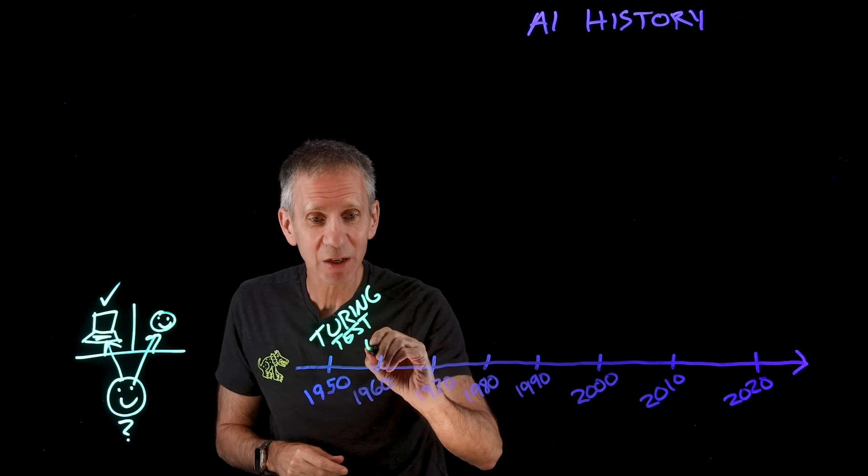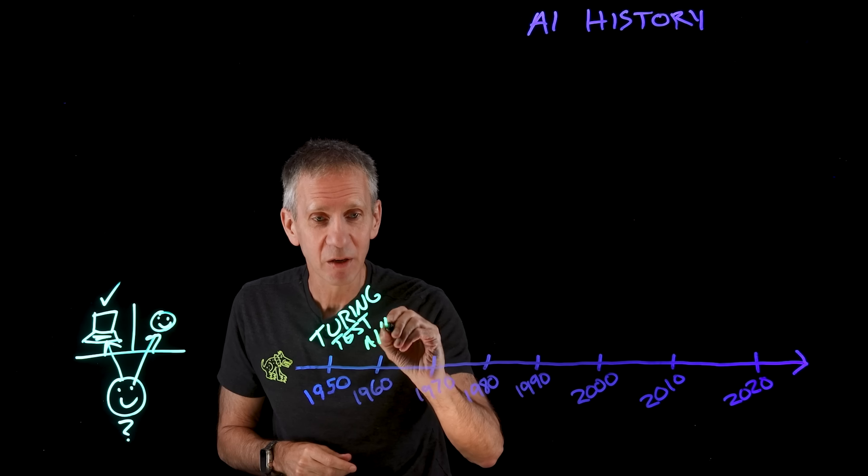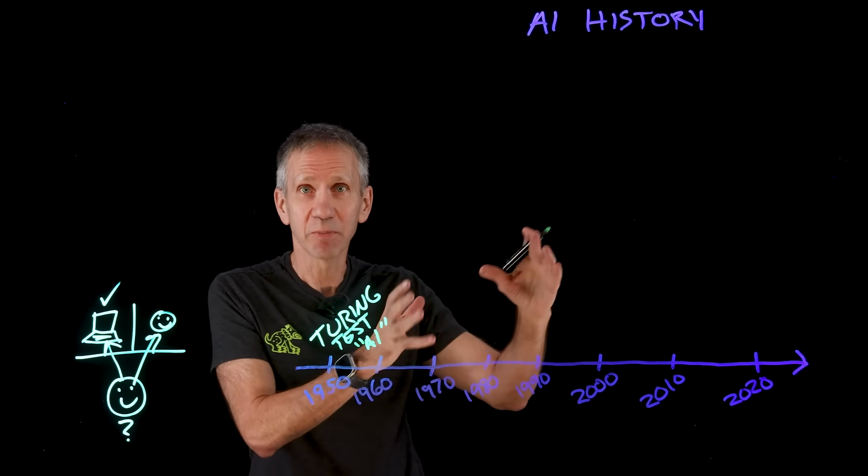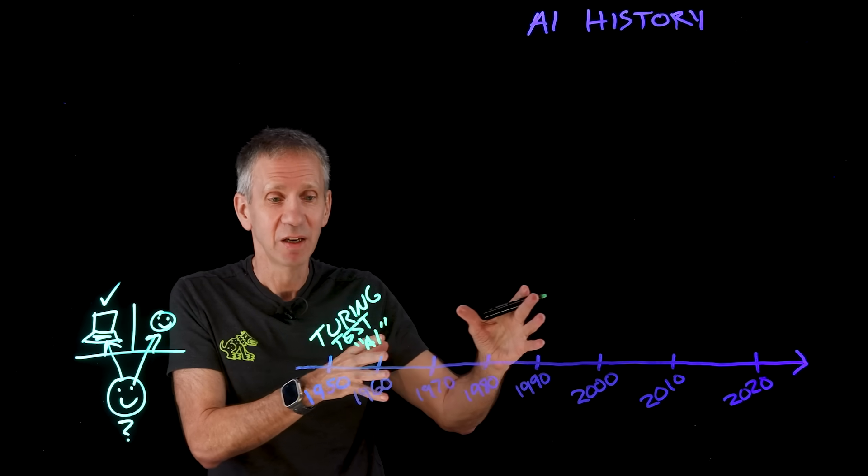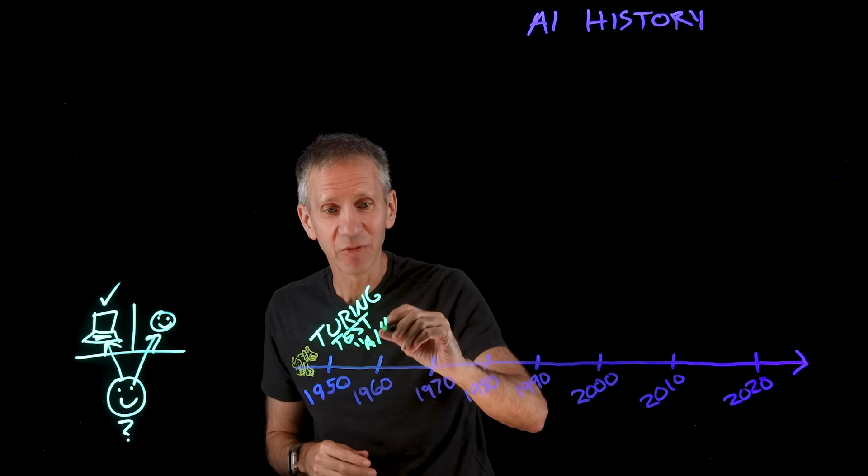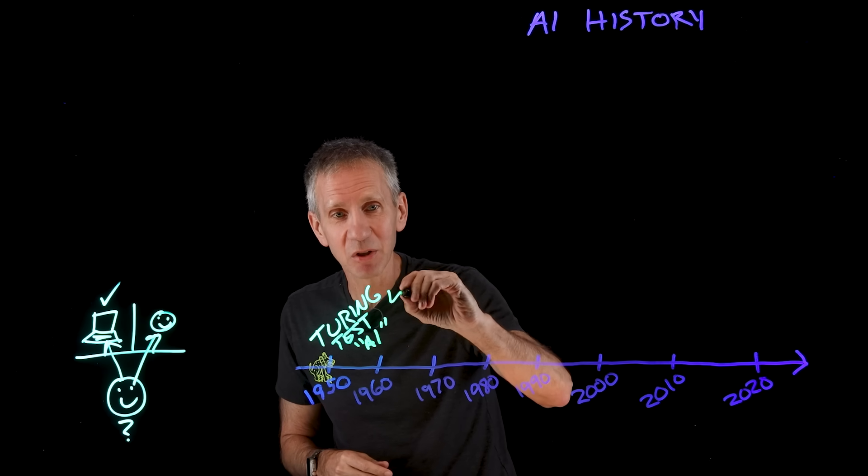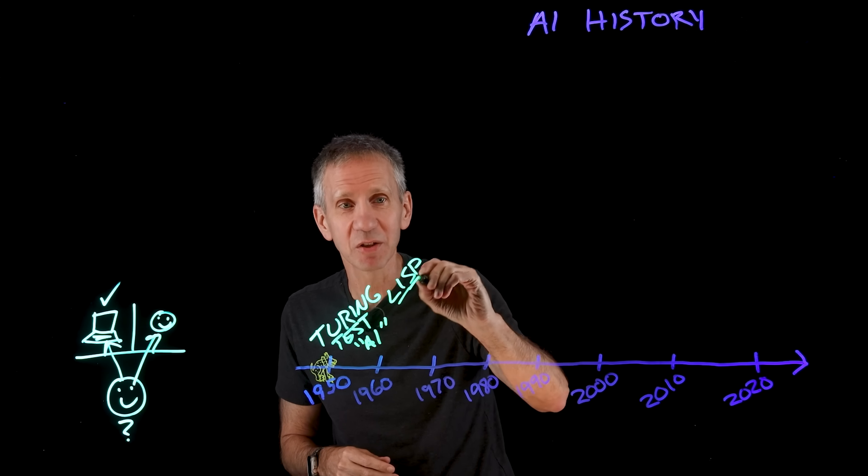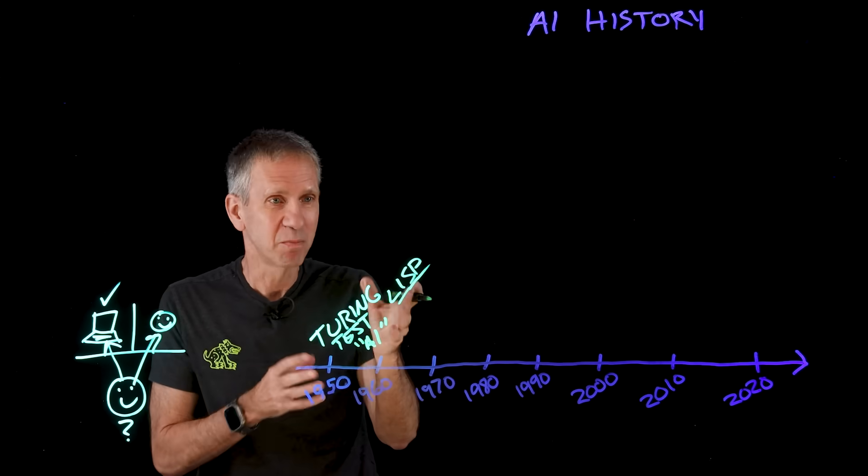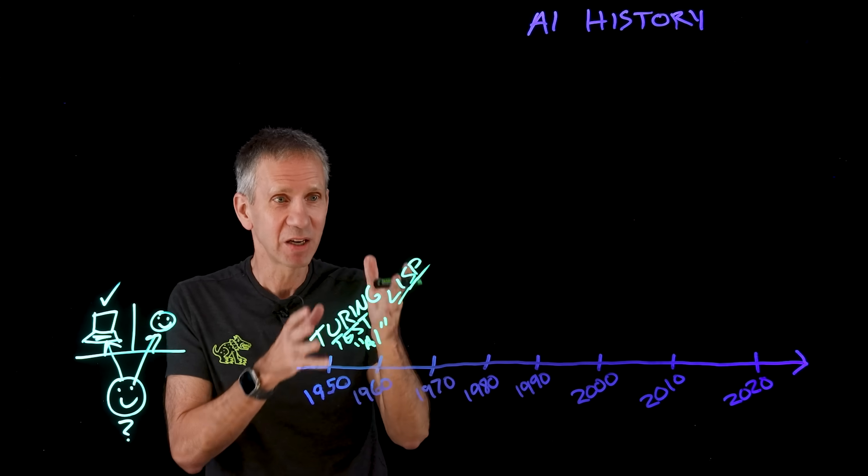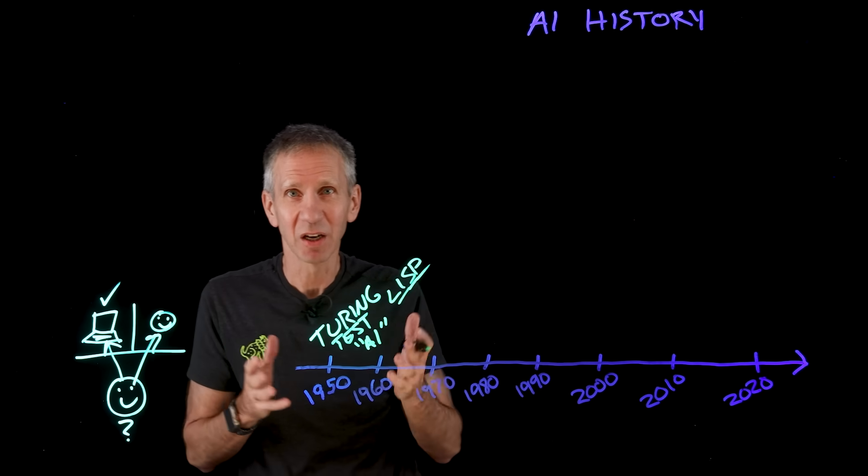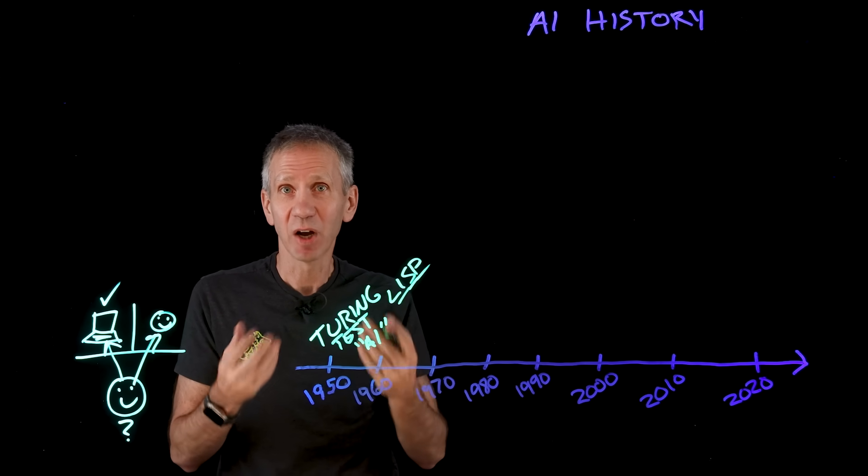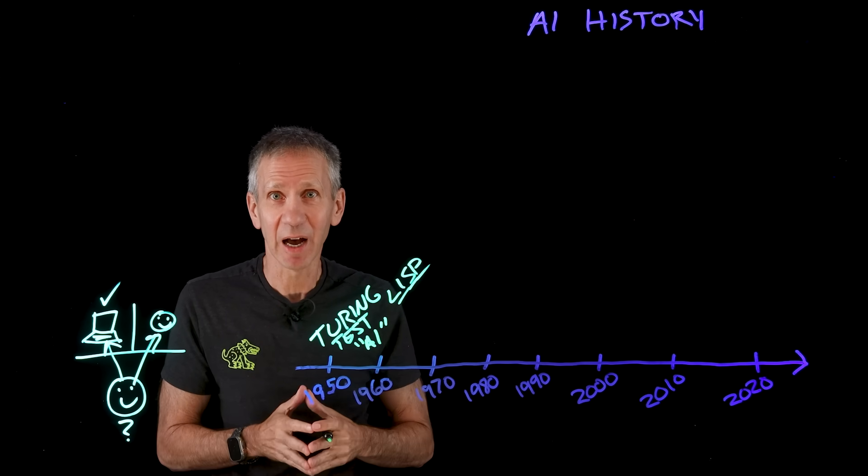The term AI actually was coined a little bit later, in 1956, and then we started really progressing along this timeline. Back in the late 50s, there was a programming language that came out called LISP, short for List Processing. And in my early days of AI programming, this is what we used. That was back in the early 80s. That was really still considered to be the predominant way you did things with AI.